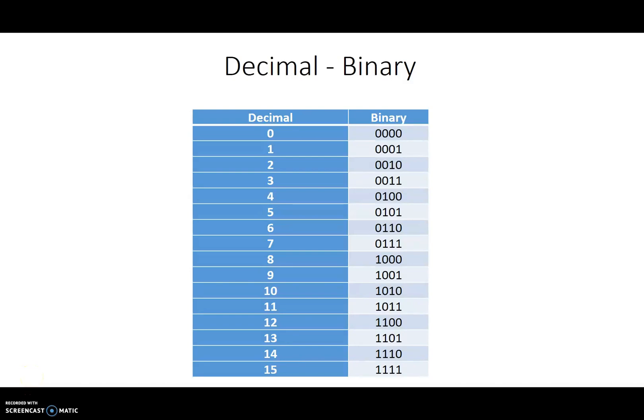Welcome back. In the last video we were talking about representing real-world quantities using a computer system's number system. We looked at decimal and binary and quickly talked about how we count in binary. So here is where we left off last time — the count of decimal numbers from 0 through 15 and a corresponding count in binary.